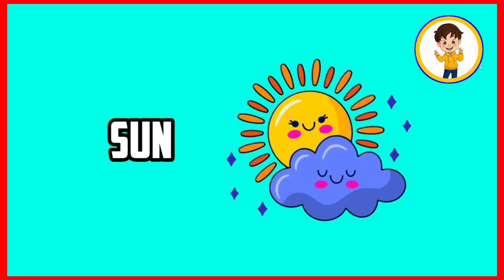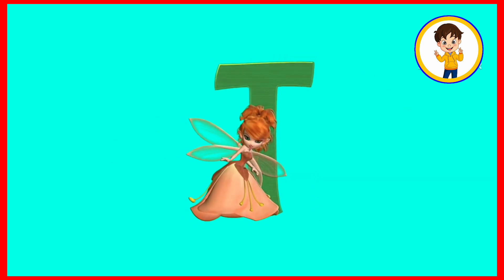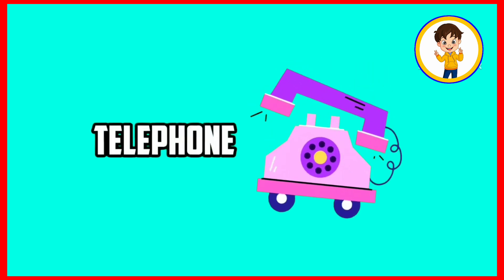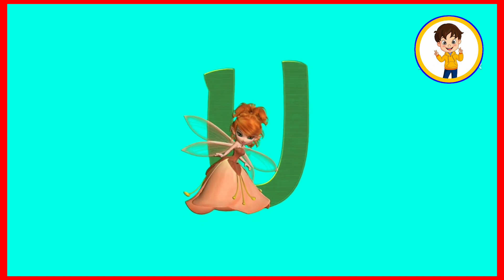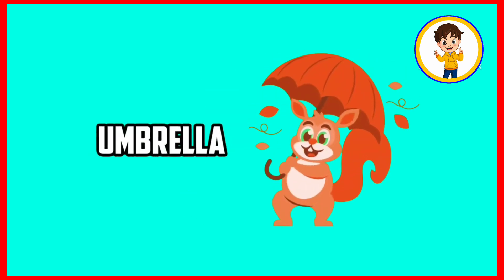S. S is for sun. Sun means suraj. T. T is for telephone. Telephone means durbhash. U. U is for umbrella. Umbrella means chhatri.